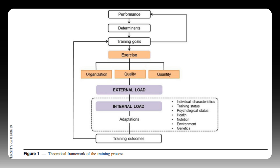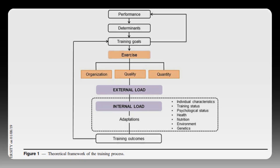Because internal load experienced in response to a specific external load varies depending on different contextual factors between athletes — such as their individual characteristics, training status, or psychological status — it is through measuring internal load, such as heart rate response to exercise, that we understand the stress that our athletes have been exposed to. TRIMP, training impulse, as it stands for, is a method to quantify internal load.